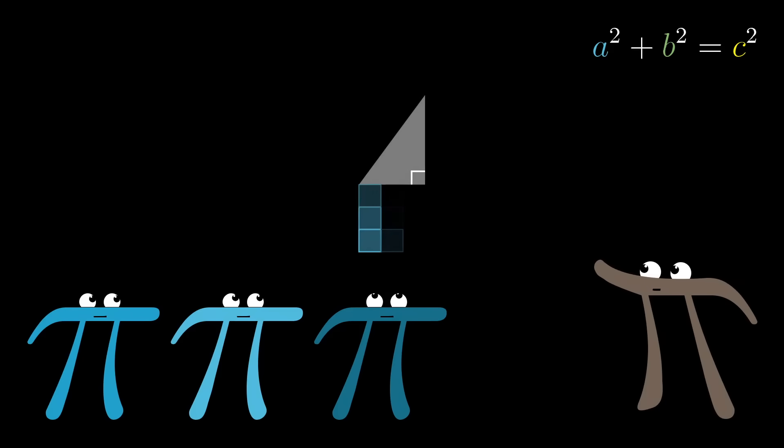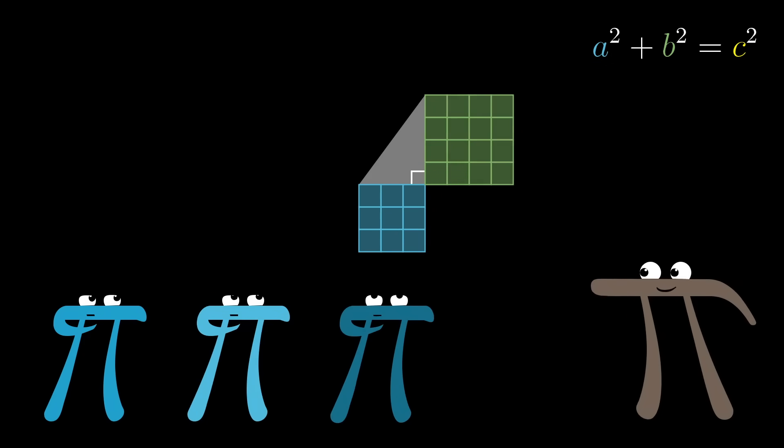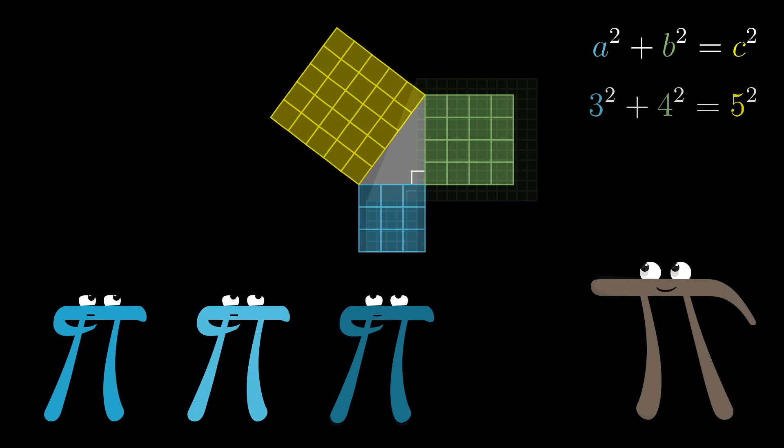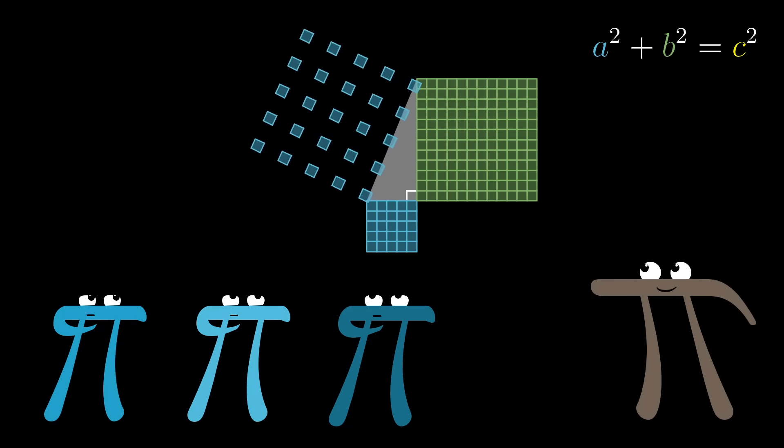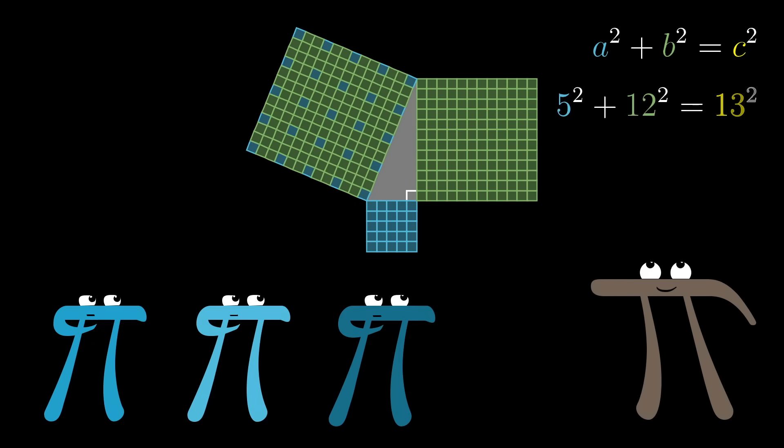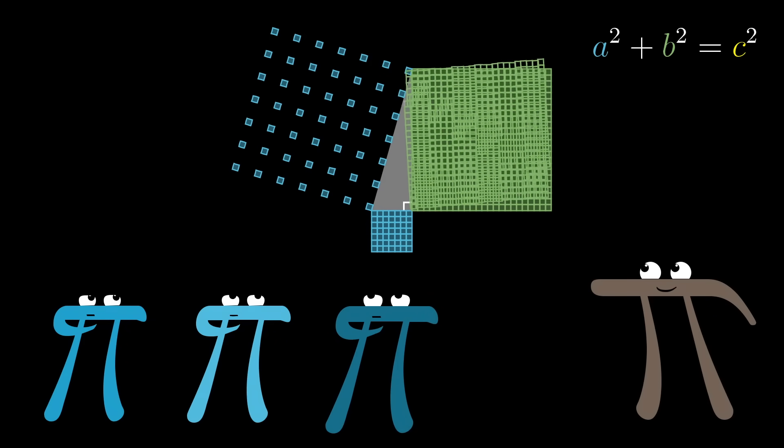When you first learned about the Pythagorean Theorem, that the sum of the squares of the two shorter sides on a right triangle always equals the square of its hypotenuse, I'm guessing that you came to be pretty familiar with a few examples, like the 3-4-5 triangle, or the 5-12-13 triangle. And I think it's easy to take for granted that these even exist, examples where the sum of two perfect squares happens to be a perfect square.